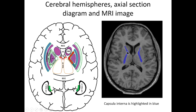This is capsula interna. Laterally to it, we can find nucleus lentiformis — which consists of putamen and globus pallidus. Laterally to it we can see white matter, and inside of it there is a claustrum, which isn't quite clearly seen. Nevertheless, we can distinguish the white matter that divides the nucleus lentiformis and the cortex of the insula. This is the insula. In our diagram, the cortex of the insula is here. This is sulcus lateralis, or sulcus sylvii.